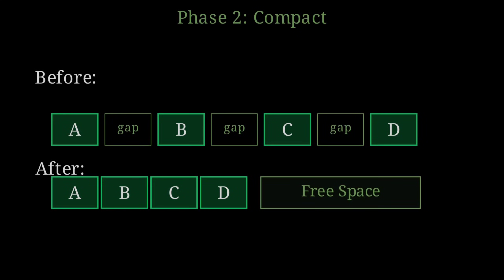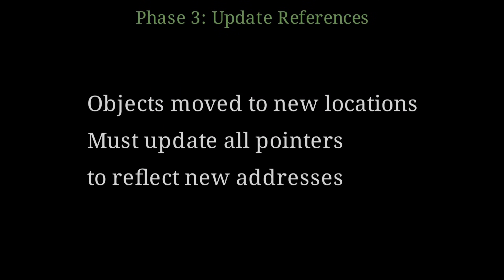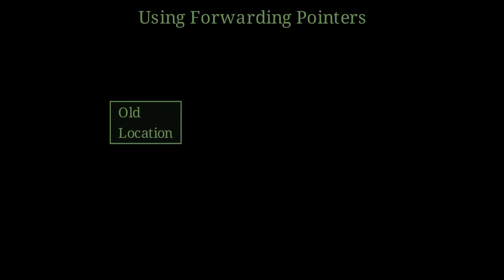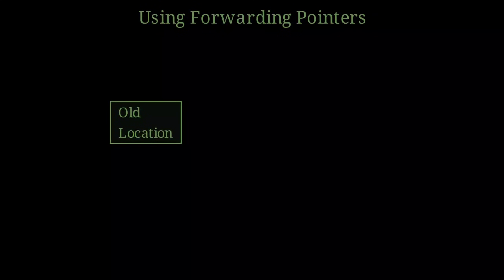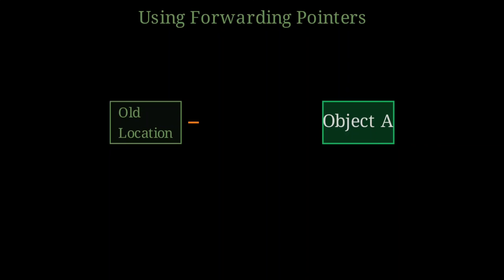But there's a complication. We just moved objects to new locations in memory, so every reference to these objects now points to the wrong address. We must update all the pointers to reflect the new locations. This is phase three. The collector scans through memory and updates every reference. To make this update efficient, the collector uses a clever trick: forwarding pointers. When an object is moved, the collector leaves a forwarding pointer at the old location, showing where the object moved to. When the collector encounters a reference to the old location, it follows the forwarding pointer to find the new location, then updates the reference to point directly to the new location. This ensures that after compaction, all references are correct.